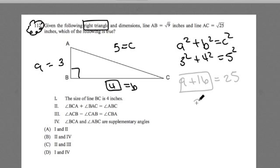So in fact, this missing side has to be 4 in order for A squared plus B squared to equal C squared, in order for this to be actually a right triangle. So this is true. Well, what about statement 2?